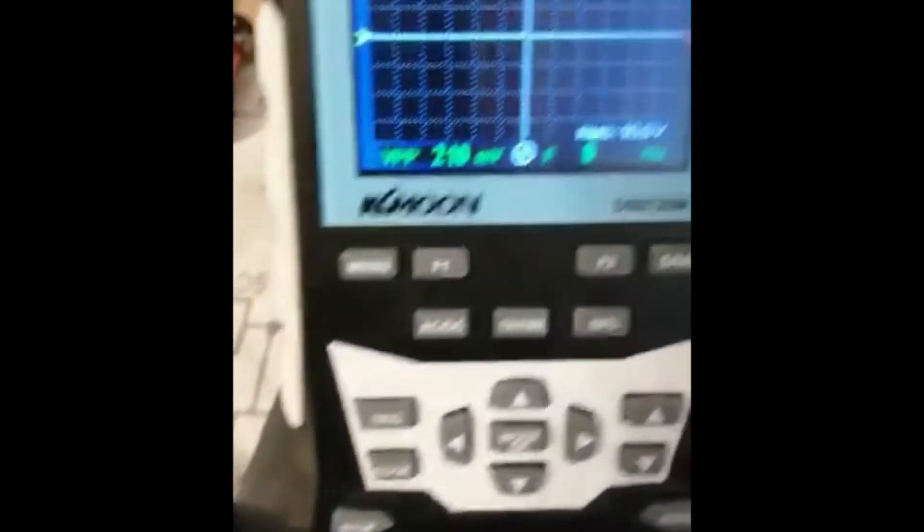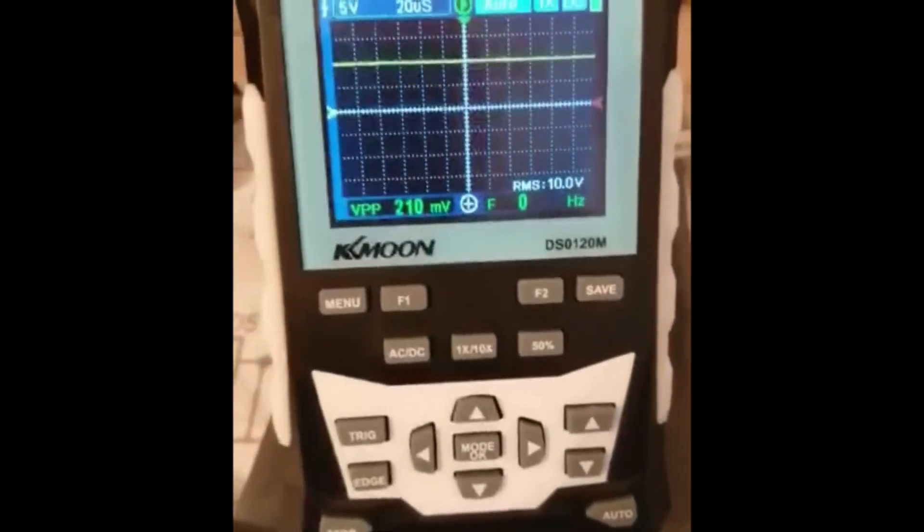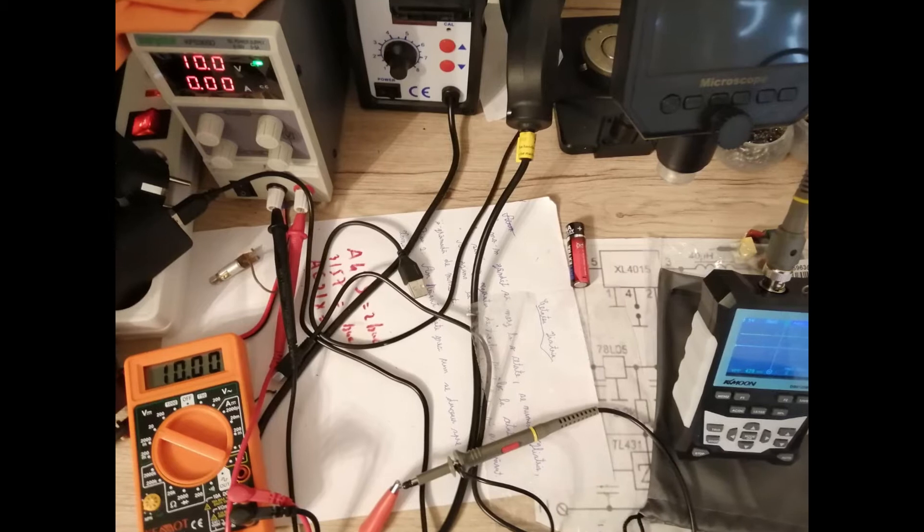So, changing the value of the trimmer, of the variable resistor, we can reach exactly the voltage we need, in our case 10 volts and you can see that very nice on the display, there is an RMS value of exactly 10 volts,